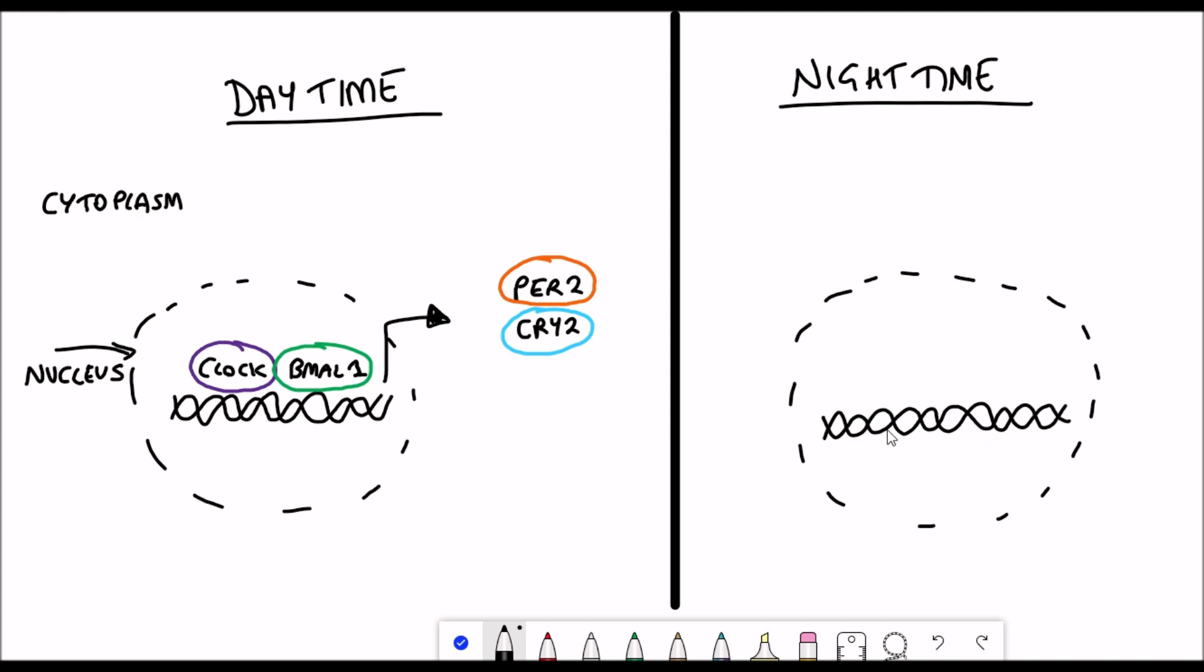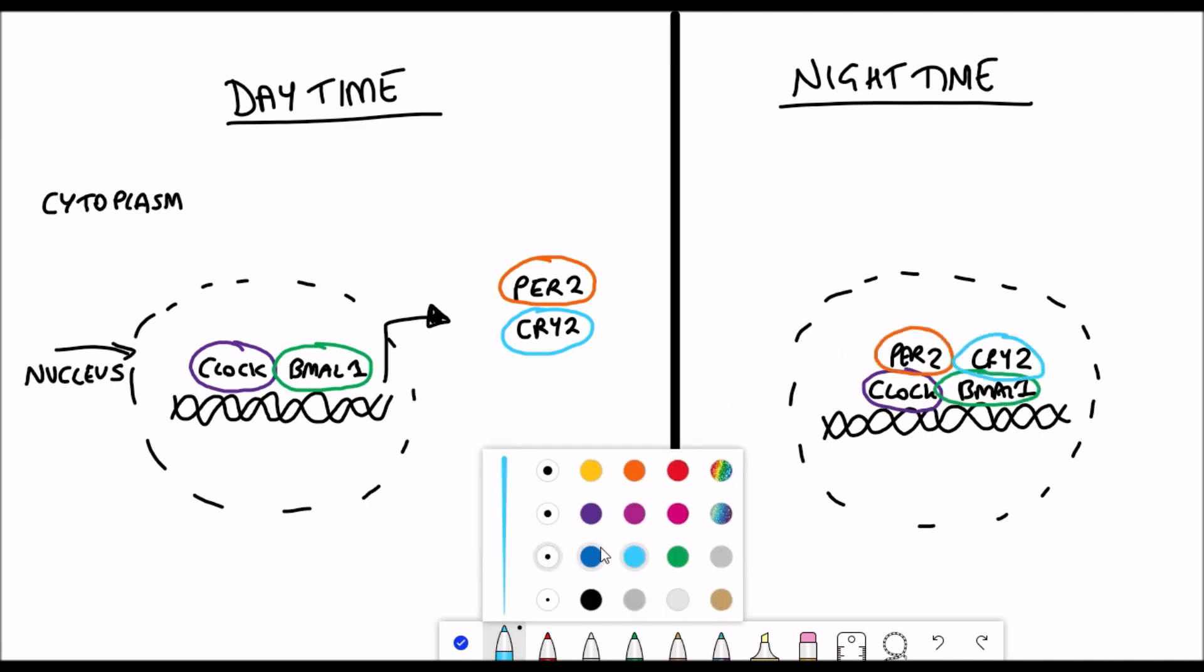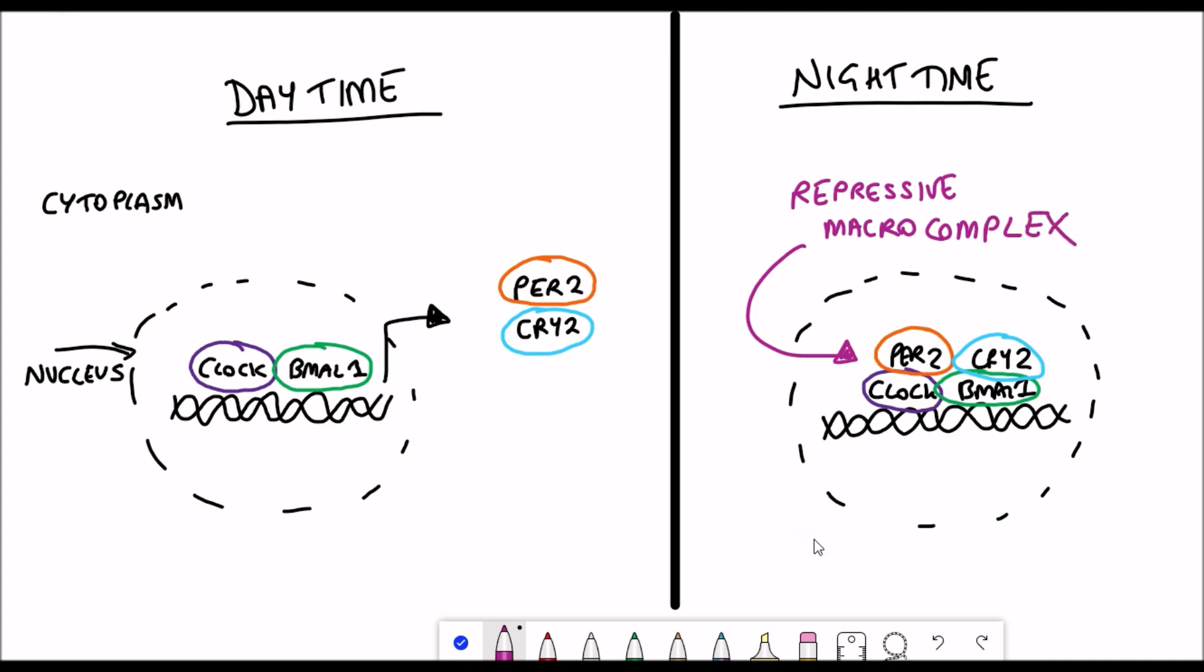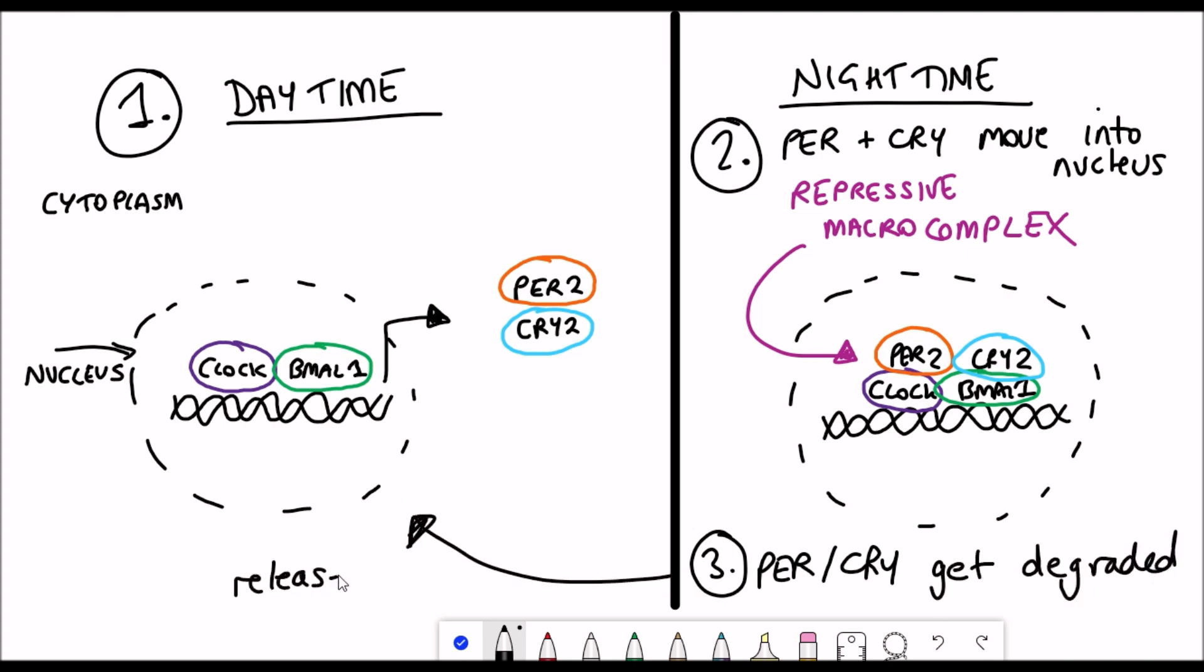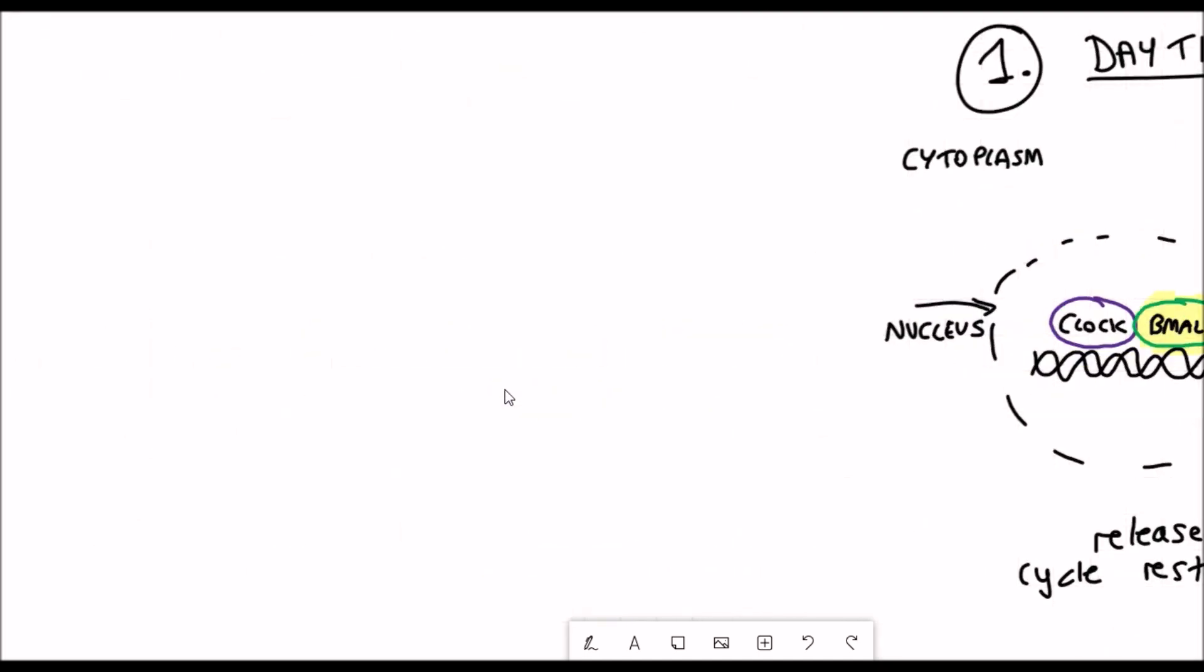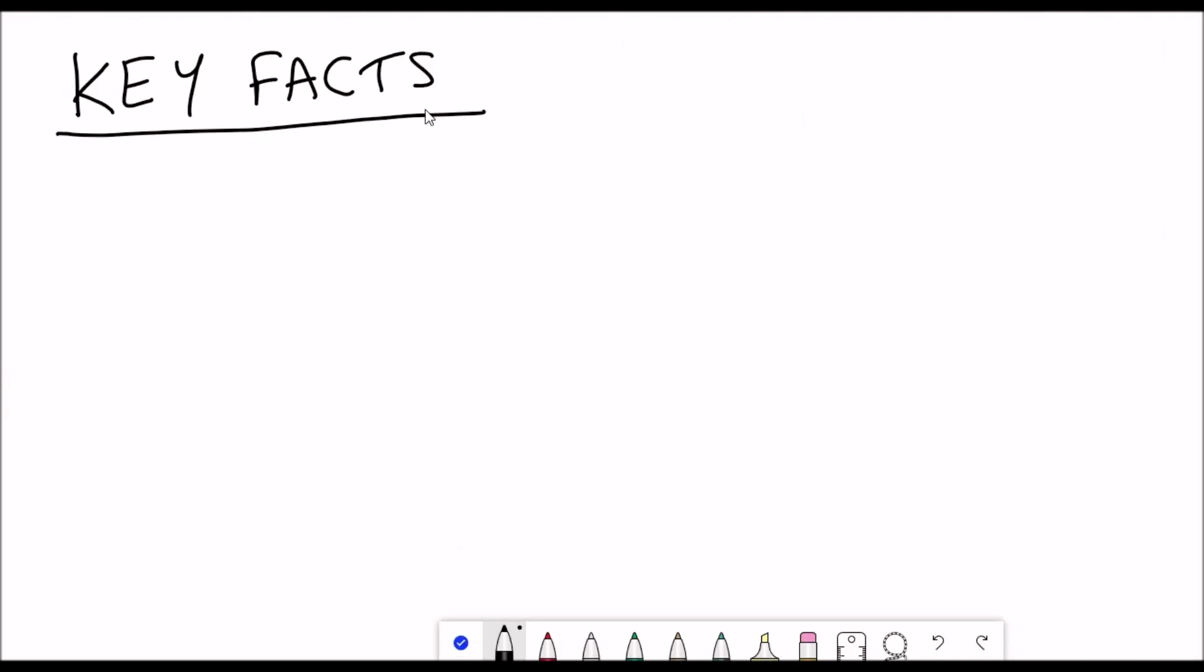In the daytime, clock and BMAL1 bind to DNA because they are transcription factors, and they upregulate the expression of lots of different genes. Two of those genes happen to be period and cryptochrome. Period and cryptochrome remain in the cytoplasm until some signals enable their nuclear transport, where they interact with each other, and also clock and BMAL1 to form this macro complex that represses the activity of clock and BMAL1. This also represses the production of further period and cryptochrome. Eventually, period and cryptochrome get degraded, and you kind of just repeat the cycle. For this video, I've highlighted BMAL1 and PER2 because they're the proteins that we'll come back to.